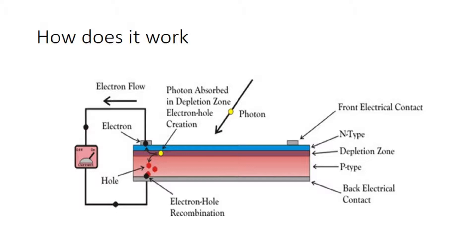As a consequence, the electrons move to the negative electrode, while the holes move to the positive electrode. A conducting wire connects the negative electrode, the load, and the positive electrode in series to form a circuit. As a result, an electric current is generated to supply the external load. This is how the PV effect works in a solar cell.